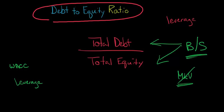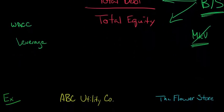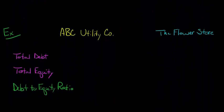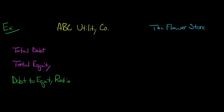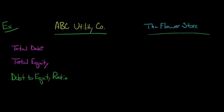Let's look at an example and how we'd compare two firms that had two different debt-to-equity ratios. Let's take a look at ABC Utility Company and then a company called The Flower Store. We'll just put some numbers out here and compute the debt-to-equity ratio for each firm and see how we can interpret it.